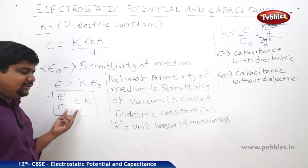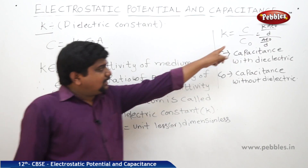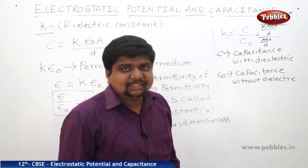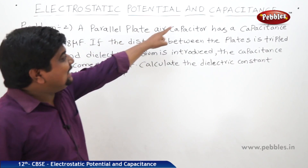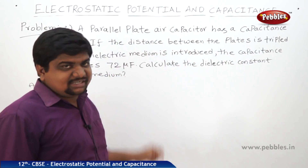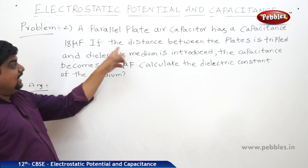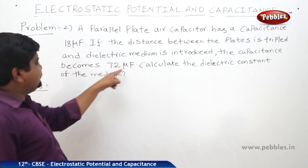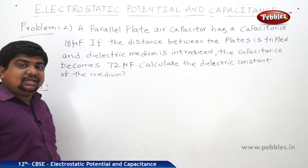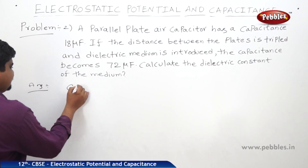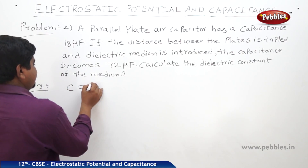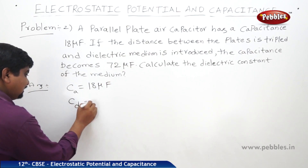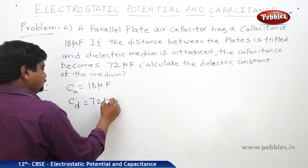So k is defined as the ratio of permittivity of the medium to that of vacuum, and also as the capacitance of the capacitor with the dielectric divided by the capacitance without the dielectric. Now consider this problem: a parallel plate air capacitor — meaning air is the medium between the plates — has a capacitance of 18 microfarads. If the distance between the plates is tripled and a dielectric medium is introduced, the capacitance becomes 72 microfarads.